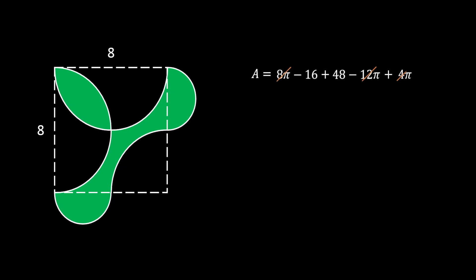As you can see, 8π plus 4π minus 12π is equal to zero, so we can cancel these three out. We are left with an area that is equal to 48 minus 16. That means that the area of our shaded green region is equal to 32.